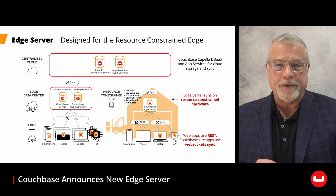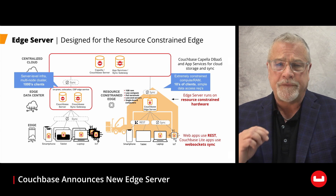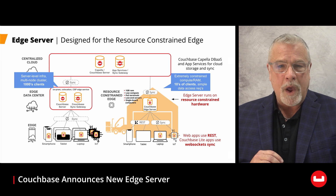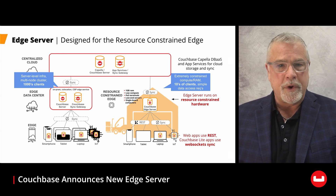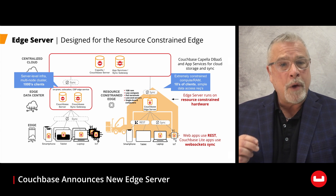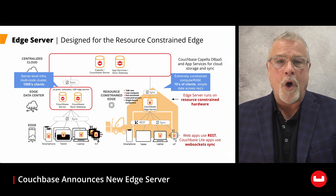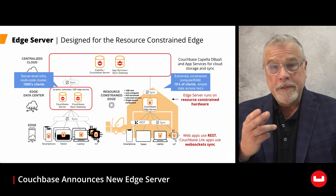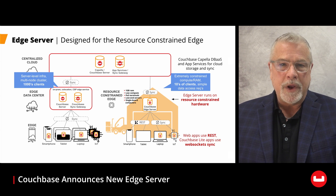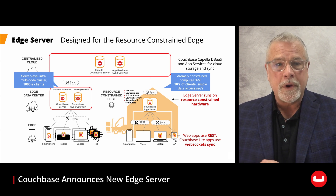With Couchbase Edge Server. Edge Server extends Couchbase Mobile's Edge capabilities to support these specific conditions. Its small footprint, REST API, and built-in WebSockets Data Sync provide the perfect solution for resource-constrained environments that need to serve a few hundred local clients, allowing data to be stored and processed on minimal compute processing and memory. This enables a lightning-fast experience for users even without the internet. And when connectivity is available, Edge Server automatically syncs with Couchbase Capella or Couchbase Server in the cloud for long-term data storage and analysis.